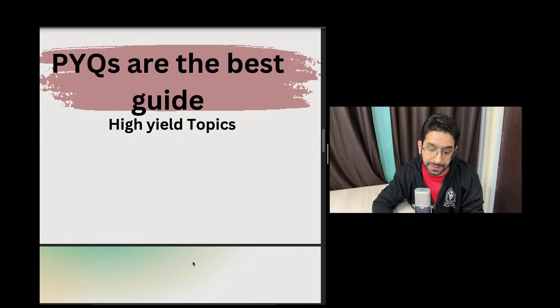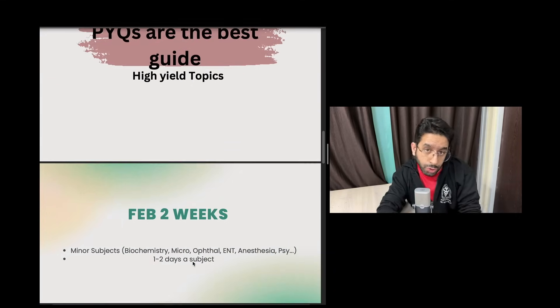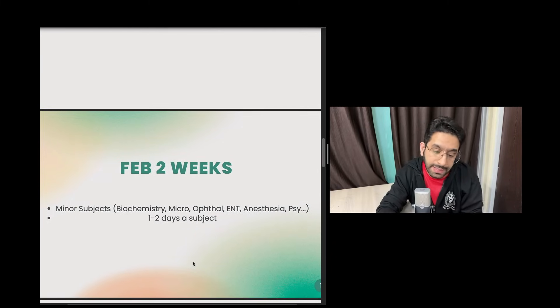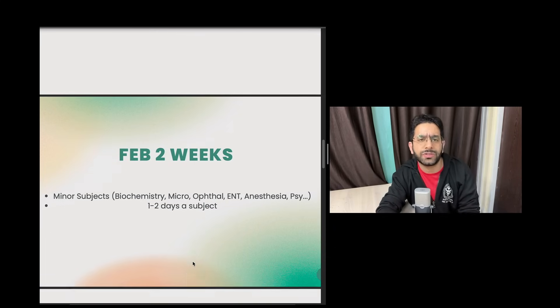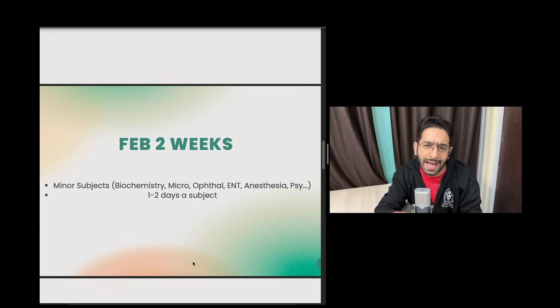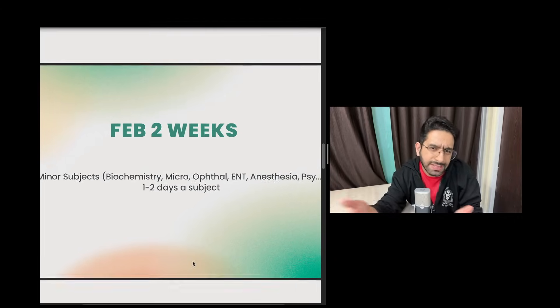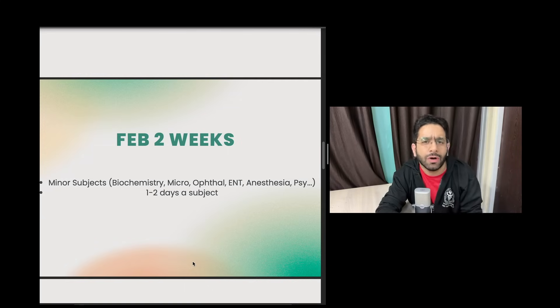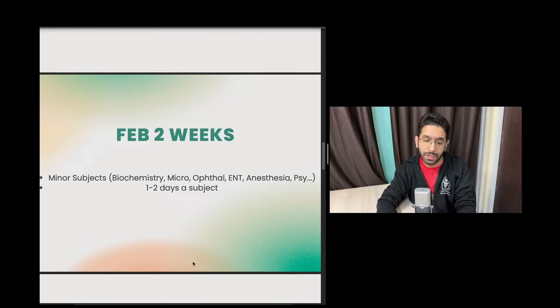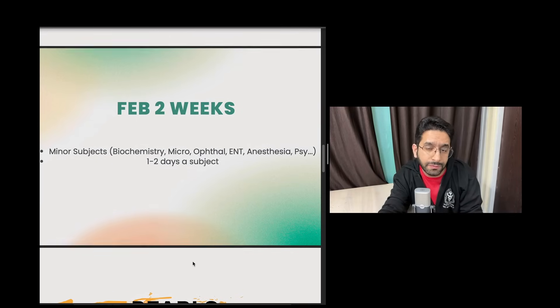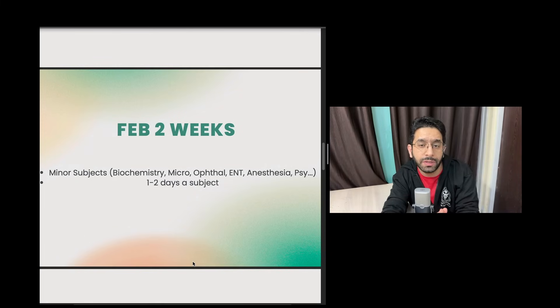In the first two weeks of February, what I would have done is cover the minor subjects - things like Biochemistry, Microbiology, Ophthalmology, ENT, PSM, Forensic, etc. I'll give one to two days each subject. For example, two days to Ophthal, two days to ENT, maybe one day to Psychiatry, one day to Forensic Medicine. Which means by mid-February, by about 15th February, you should be doing one complete revision of all 19 subjects from 1st Jan to 15th February. That's mandatory.